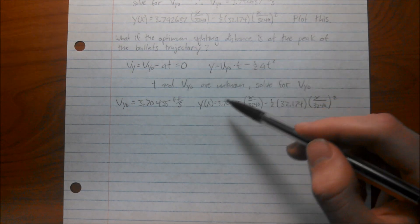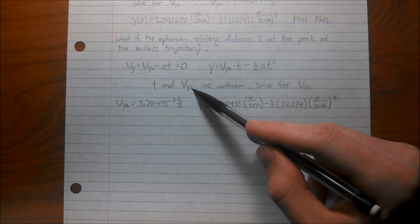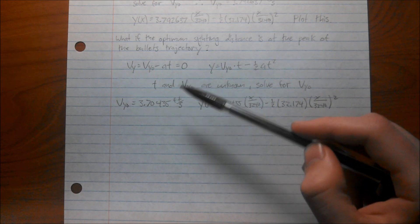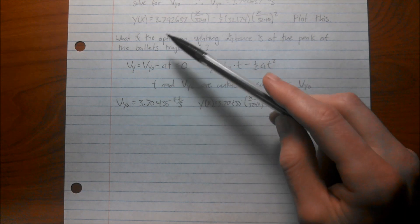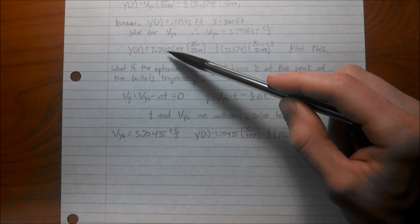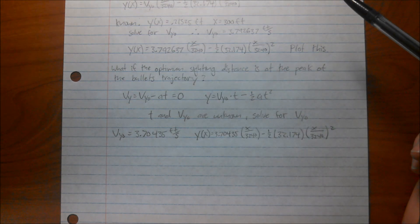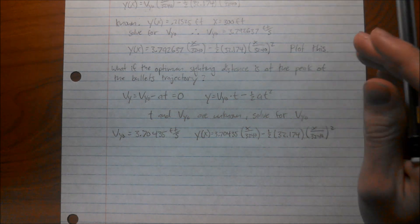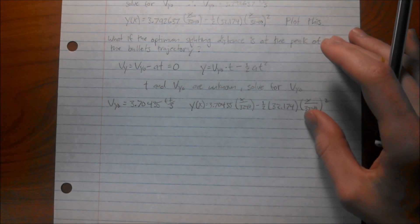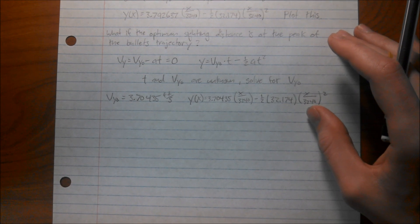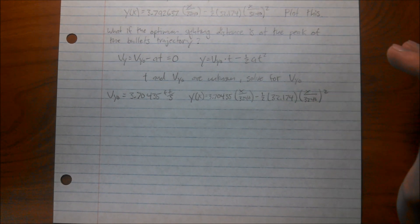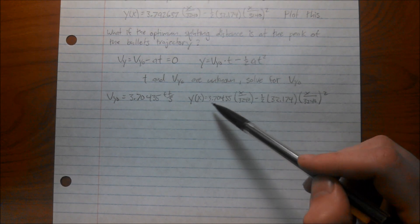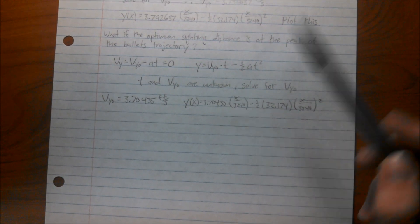So, we'll solve these equations and get the initial velocity in the y direction, which ends up being 3.70435, which is, if you'll notice, it's only like .09 feet per second smaller than the first one we calculated. But since the bullet's going so fast, and the height above the bore is so small, this is actually significant. But anyway, now we can plug it back into the y equation right here, and we can plot this.